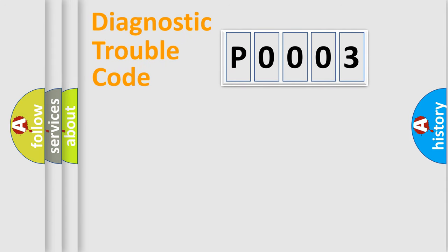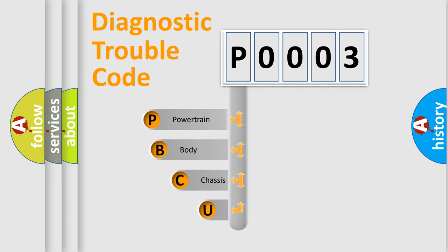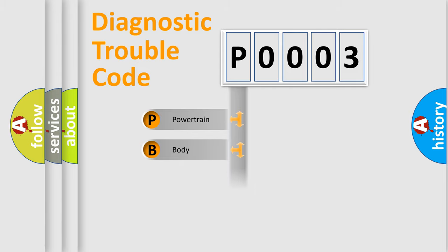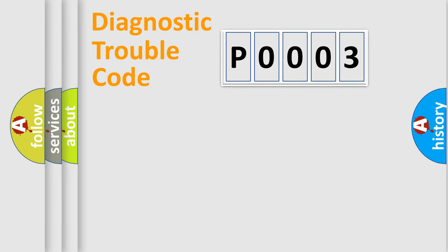First, let's look at the history of diagnostic fault code composition according to the OBD2 protocol, which is unified for all automakers since 2000. We divide the electric system of the automobile into four basic units: Powertrain, Body, Chassis, and Network. This distribution is defined in the first character of the code.